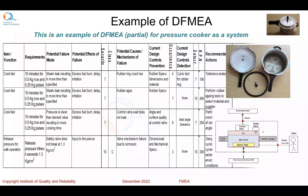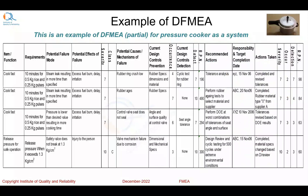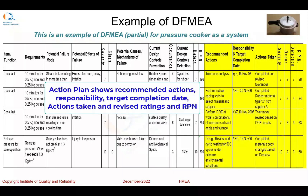Based on these risk priority numbers and the priorities identified, you can decide an action plan. The suggested action plan shows recommended actions, responsibility, target completion date, actions taken, and revised ratings with a revised RPN.